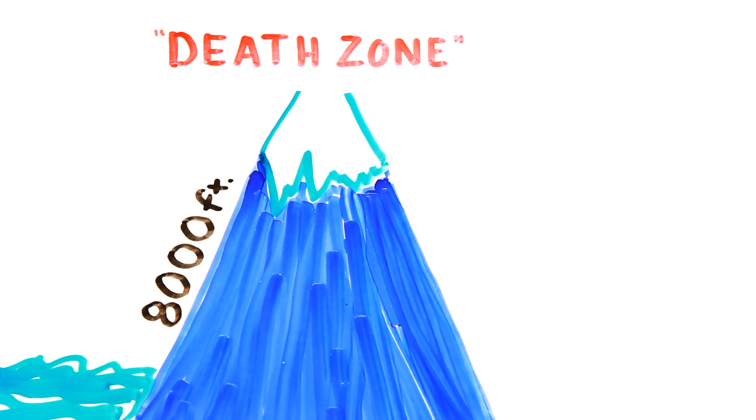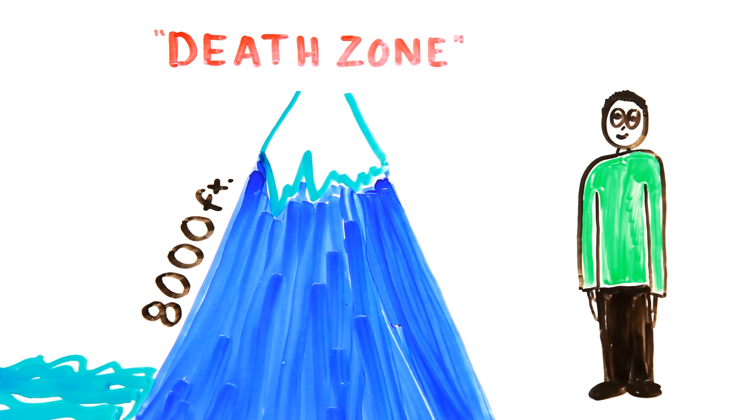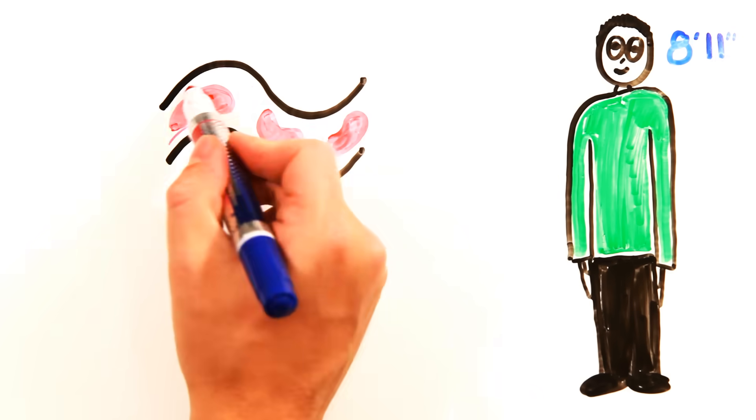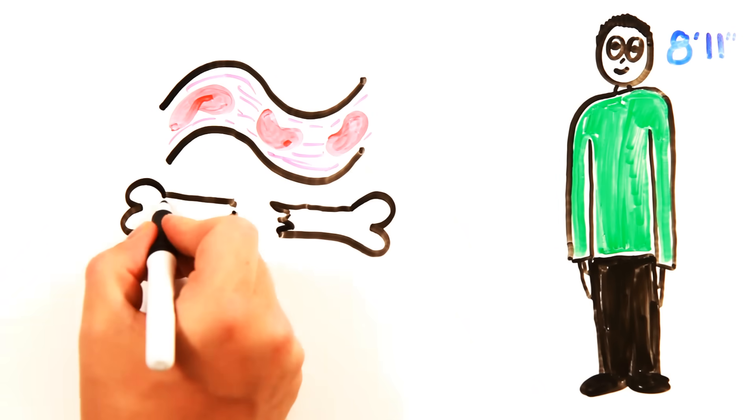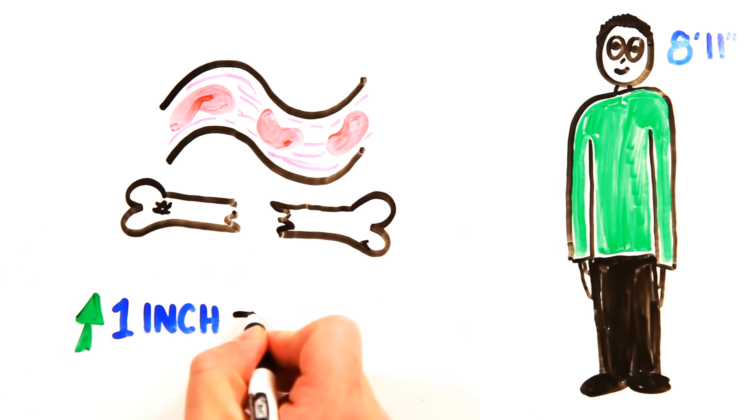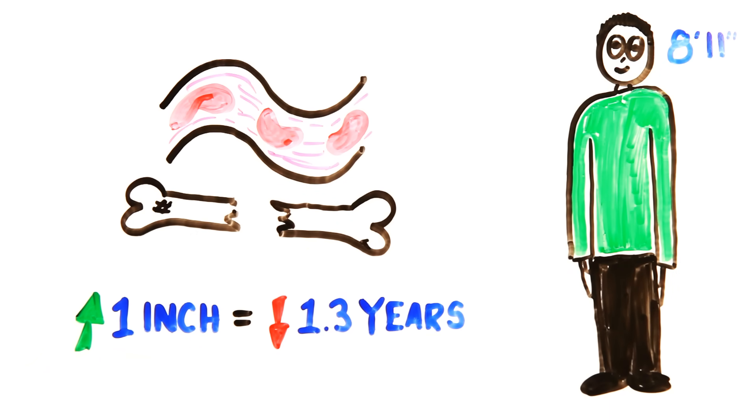Simply being too tall can also kill you. In the 1930s, Robert Pershing Wadlow reached 8 feet 11 inches. This height put severe stress on his circulatory system and structural pressure on his bones, and he died at the young age of 22. Researchers have hypothesized that every inch above 5 feet takes 1.3 years off your life.